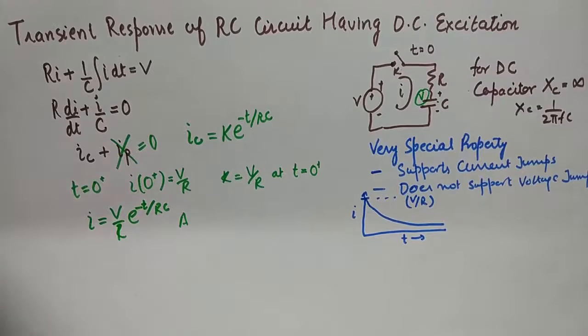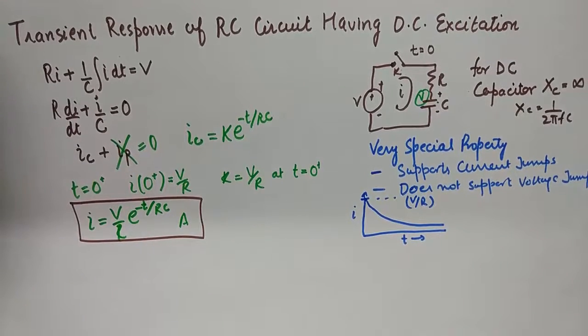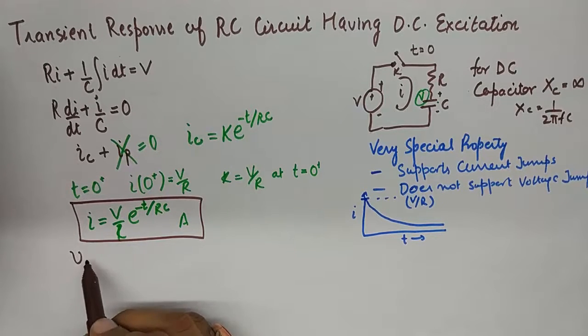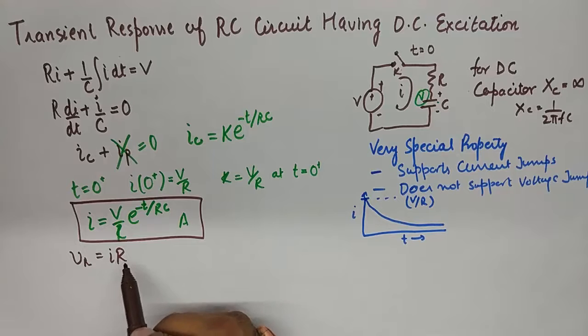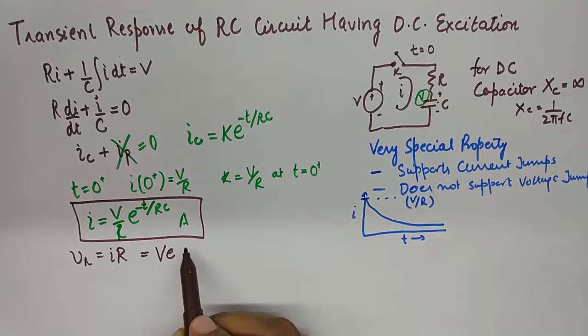Very very important thing. And if we were to calculate the voltage across resistor we would say it is i into R. So here we can calculate the voltage across resistor at any instant of time by multiplying it with the instantaneous current. So this becomes Ve^(-t/RC).